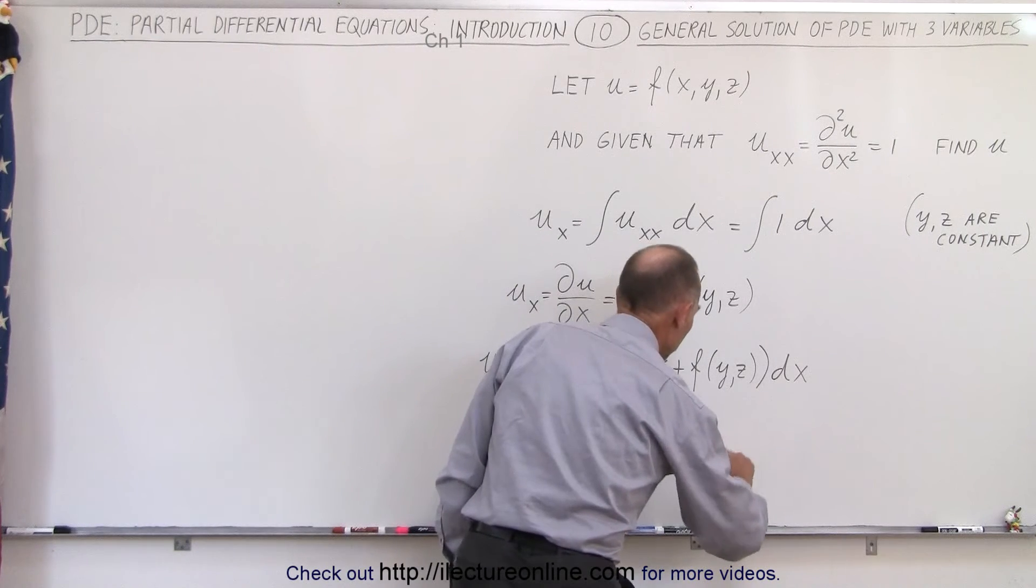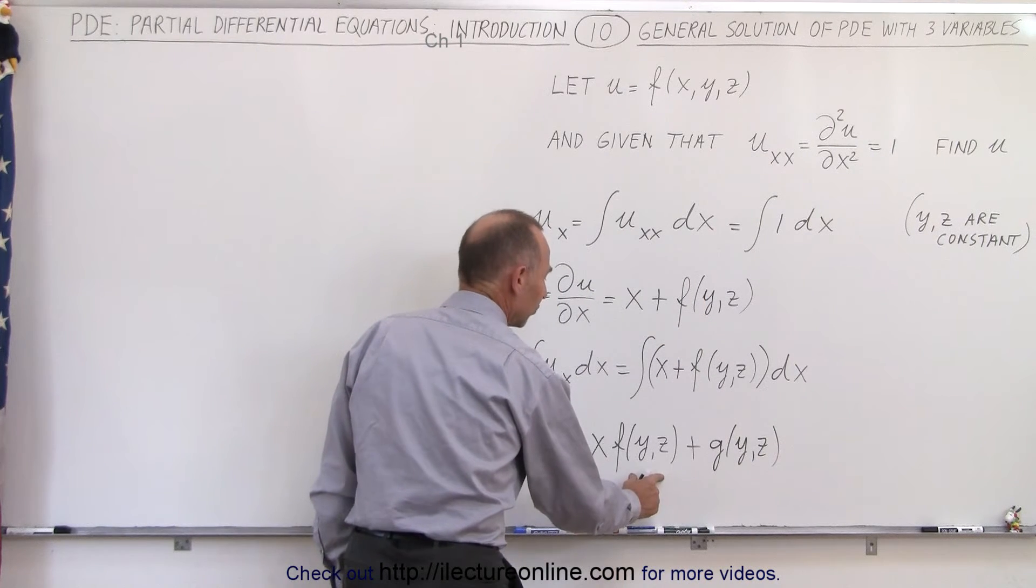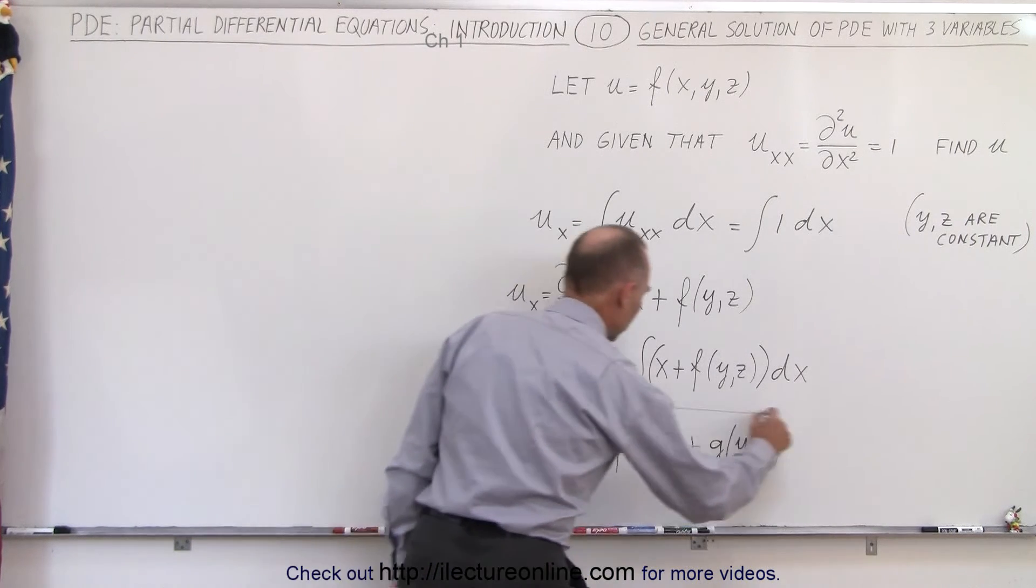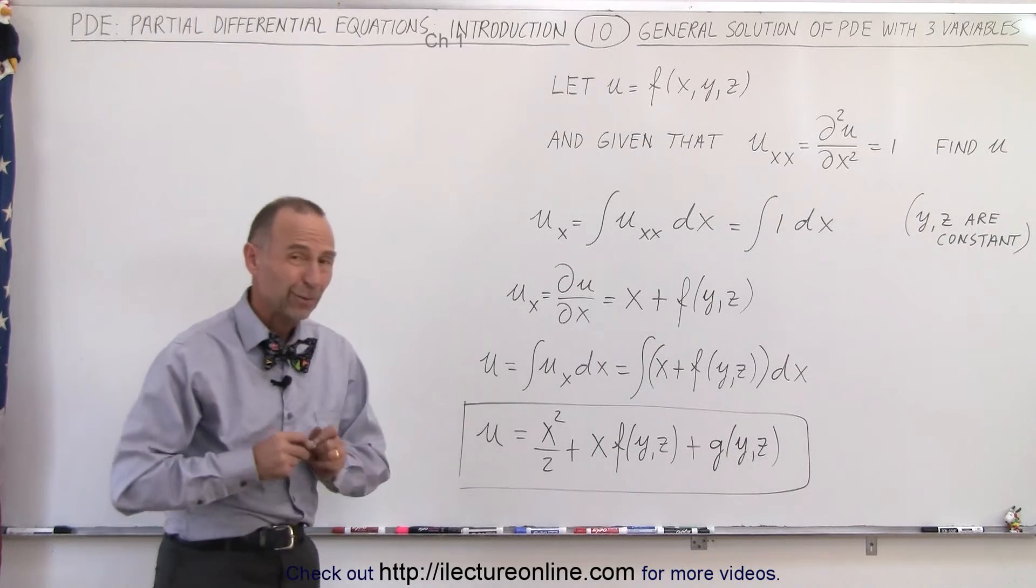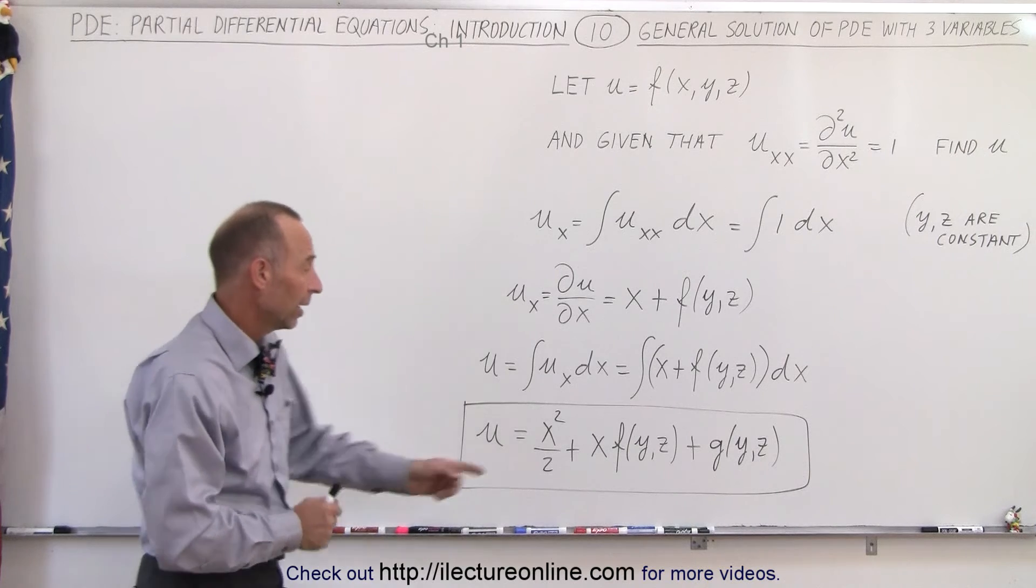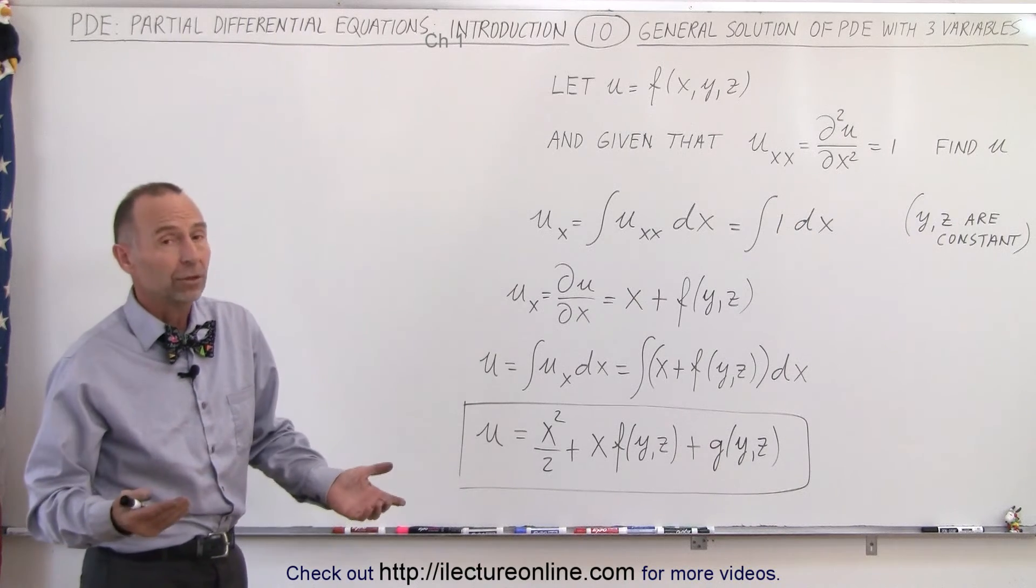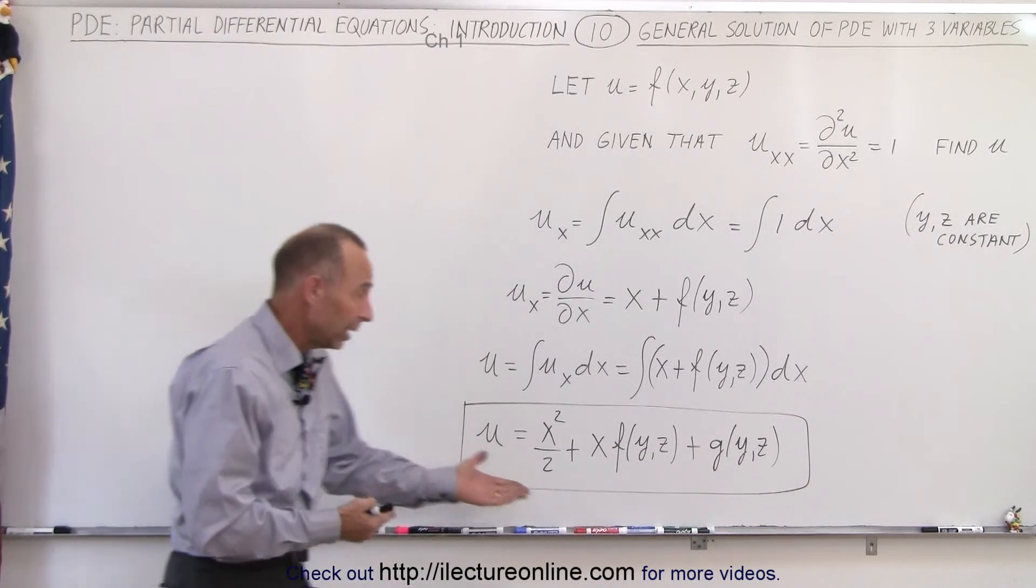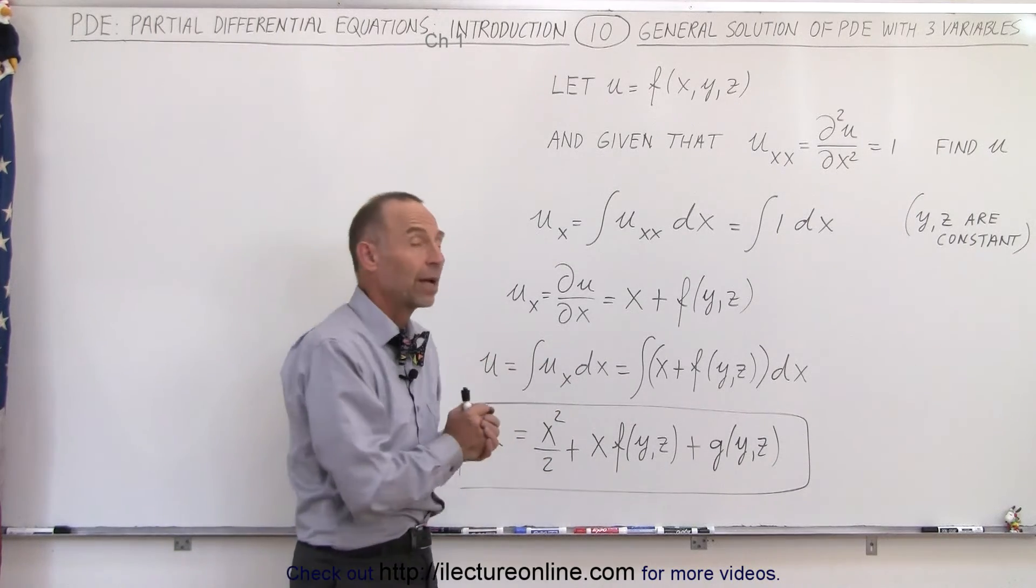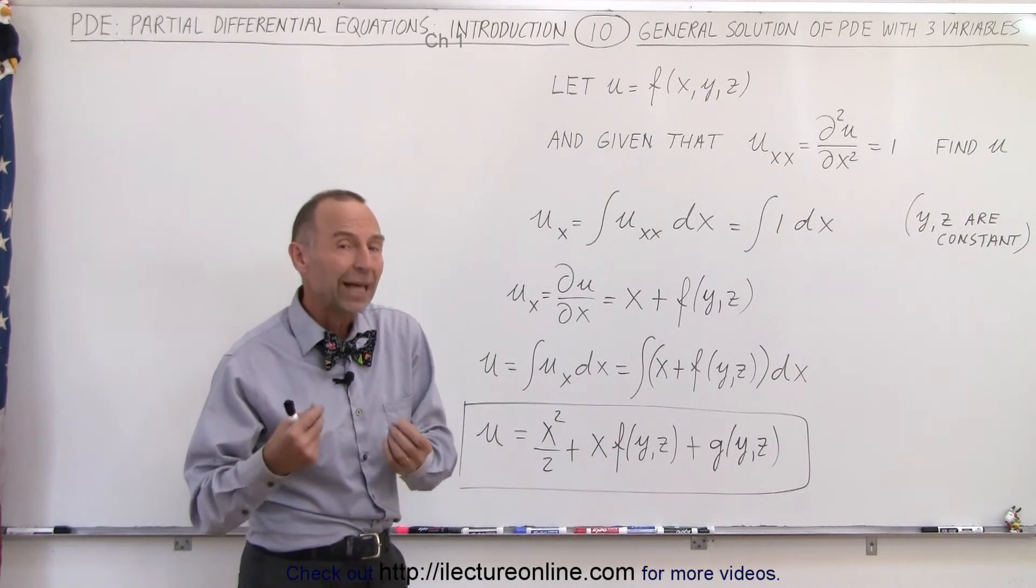So notice, this gets added on the first integral, and this gets added on the second integral, and so there we get u is going to be equal to this. So each time we integrate, we need to introduce another function where the variables are constant, and so we introduce two separate functions of both of those variables. Now, that could be zero, that could be a function of y only, and a function of z only, a function of y and z, it could be a combination of them, but we do have to account for them, and we don't know what those are, unless we have some boundary conditions that will help us figure that out.